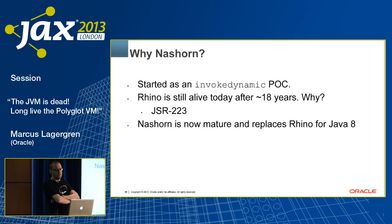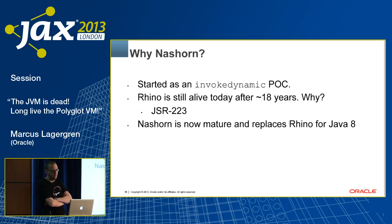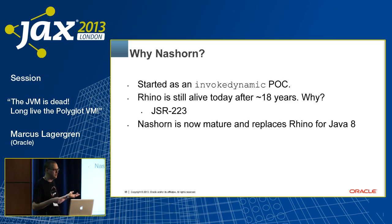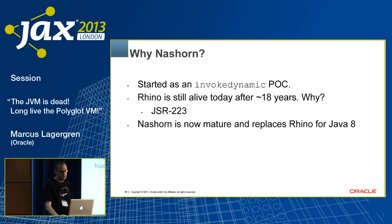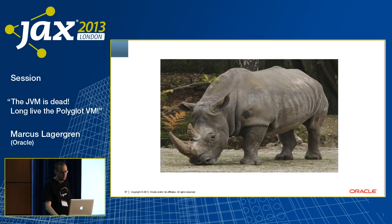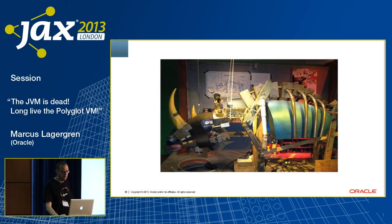We started Nashorn as a proof of concept for invokeDynamic in late 2010 because we needed to know: does it work? Have we forgotten anything? Will the JVM be able to compile this to something that goes fast? Rhino is still alive today after 18 years because of JSR-223, the javax.scripting API — people can call Java from JavaScript and JavaScript from Java, and that's why they still use Rhino. So it seemed natural to go in a productization direction, and Nashorn is now mature and replaces Rhino for Java 8. Nashorn means rhinoceros in German.